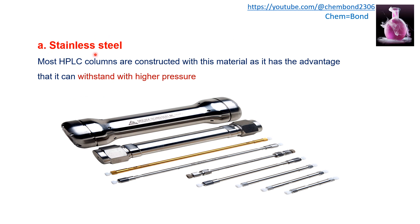Stainless steel is the most commonly used column material in HPLC. Since solvents are used at high pressure in HPLC, the column must be made from a material that can withstand high pressure. Stainless steel has the advantage of withstanding higher pressure, so solvents can pass through a stainless steel column more easily compared to glass and plastic columns.